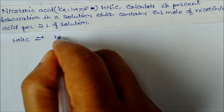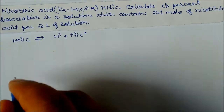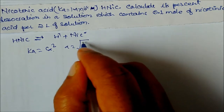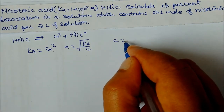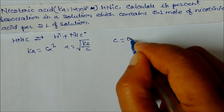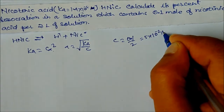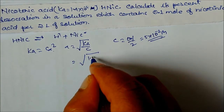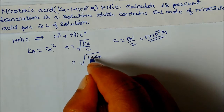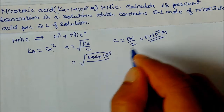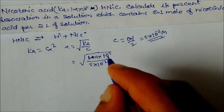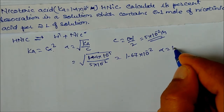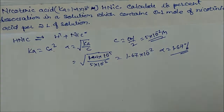HNIC undergoes dissociation to form H⁺ and NIC⁻. Since Ka = Cα², alpha = √(Ka/C). Concentration C = 0.1 mol / 2 L = 5×10⁻² molarity. Putting in Ka = 1.4×10⁻⁵ divided by C = 5×10⁻² gives 2.8×10⁻⁴. Taking the square root: α = 1.67×10⁻². So alpha is 1.67%, which is the percentage dissociation of nicotinic acid.